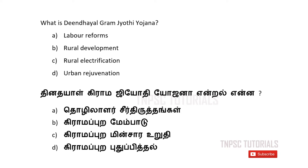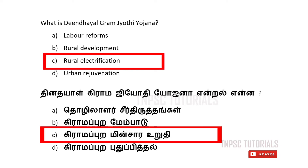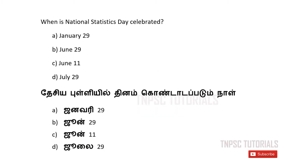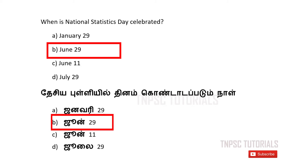B) Rural development. C) Rural electrification. D) Urban regeneration. The answer is C — rural electrification. Third one: When is the National Statistics Day celebrated? A) January 29. B) June 29. C) June 11. D) July 29. The answer is B — June 29.